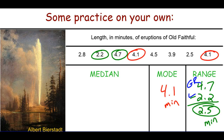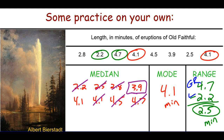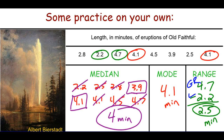For the median, ordering from least to greatest: 2.2, 2.5, 2.8, 3.9, 4.1, 4.1, 4.5, and 4.7. We start taking away the greatest and least values one by one, and we're left with something between 3.9 and 4.1. Halfway between is 4 minutes — that is our median. So: mean is 3.6 minutes, median is 4 minutes, mode is 4.1 minutes, and range is 2.5 minutes.